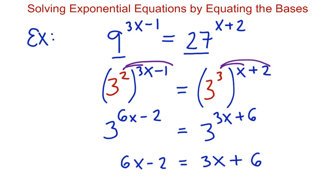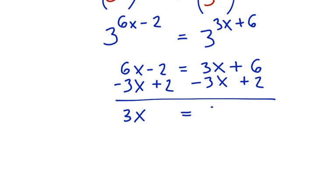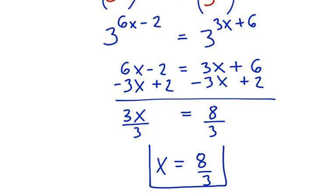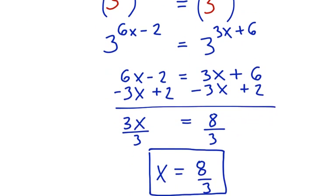So we just have a simple linear equation that we'll work to solve here. We'll go ahead and move all our x's to one side, all our numbers to the other side. I'm just going to do that in one fell swoop here. 3x will equal 8. Dividing both sides by 3, the value of x will be 8 thirds. It's a little bit more complicated than the first example, probably mostly because we had to rewrite both of our bases in this problem. But again, it's just once those bases match, we're setting the exponents equal, and we're good to go.